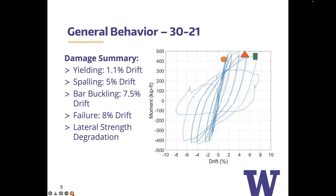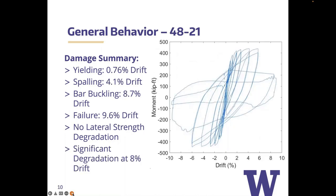We get bar buckling and eventually failure at 8% drift, which is obviously a very ductile response. If we go to the 48-inch specimen, we have slightly different responses: yielding at about three-quarters percent drift, spalling at a slightly lower drift, bar buckling not until almost 9% drift, and failure at almost 10% drift.